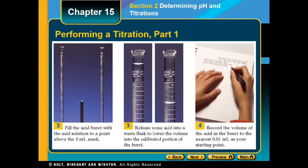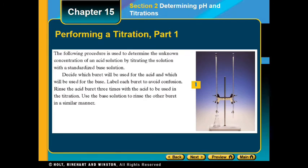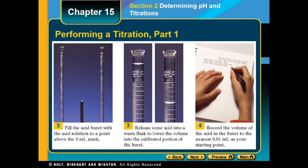Step 1: Label the burettes. Rinse the burette three times with the acid to be used in the titration, and rinse the other burette with the base solution. Step 2: Fill the acid burette with your acid solution to above the zero milliliter mark. Step 3: Release some acid into a waste flask to lower the volume to within the calibrated portion of the burette.